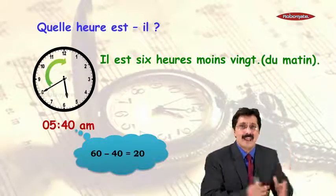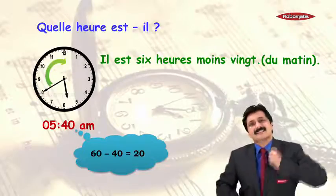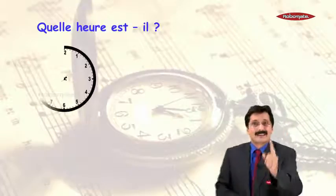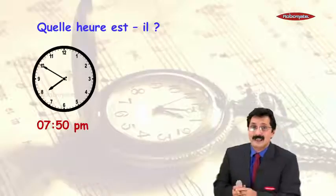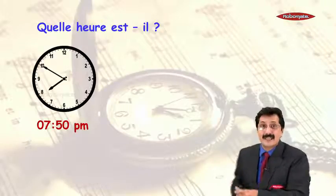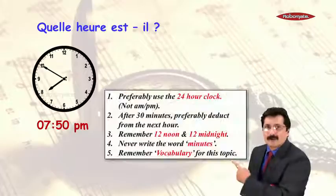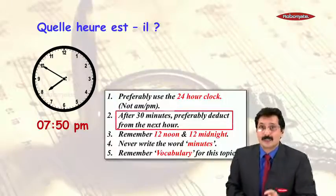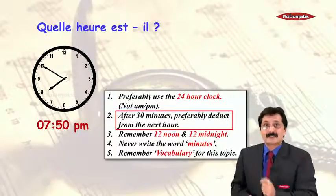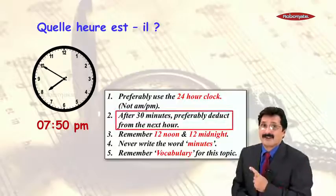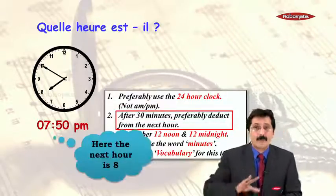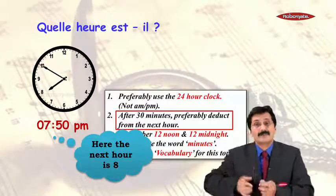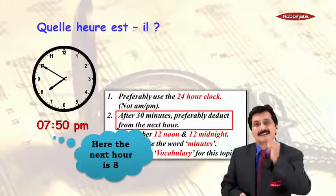Do note: whether or not you write AM, it is understood — it is AM. Moving on to the next question, quelle heure est-il? As you can see, it is 7:50 PM. Preferably the 24-hour clock is what we are looking at. After 30 minutes, preferably deduct from the next hour — the next hour is 8. So we shall not write 7:50; we shall write 8 minus 10.